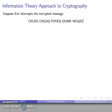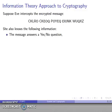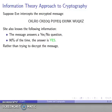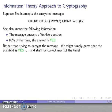Suppose that Eve intercepts some encrypted message and she wants to know what it reads. She also has some additional information: she knows that the message is an answer to a yes or no question. And let's say that she also knows that 90% of the time the answer to the question is yes. So rather than going through all of the effort of trying to figure out what this message really says, she could just guess that the message is yes, and she'll be correct most of the time.